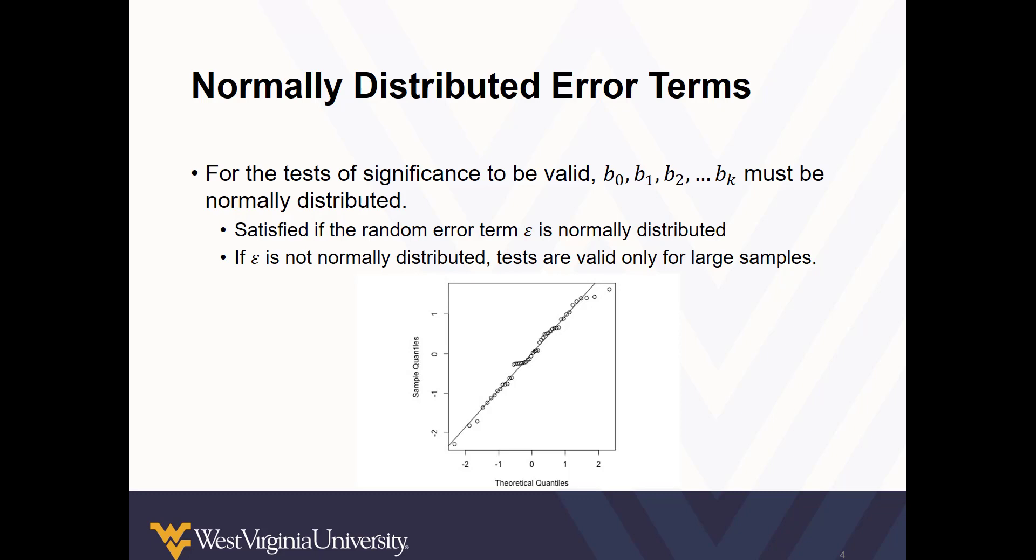For these tests of significance to be valid, the random error term must be normally distributed, and what you see pictured is what a normally distributed residual looks like. It should take this very linear shape.